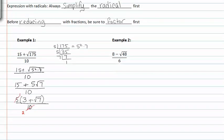Now that I've reduced my fraction I can rewrite it in reduced form. Three plus root seven all over two.